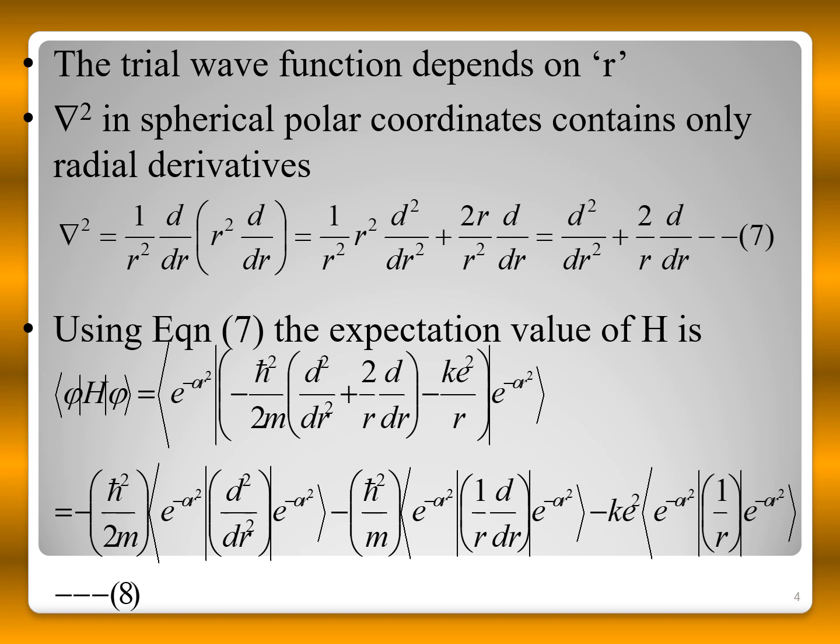Since the trial wave function depends only on r, the Laplacian ∇² can be written in spherical polar coordinates containing only radial derivatives: ∇² = (1/r²) d/dr(r² d/dr), which expands to d²/dr² + (2/r) d/dr.